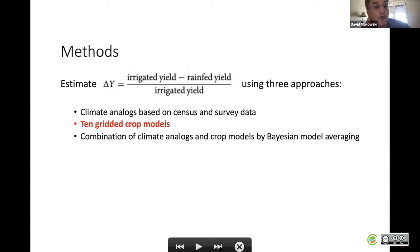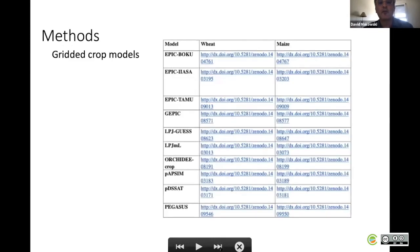The second approach is more traditional. It's based on the 10 gridded crop models. You run the model with and without irrigation at the global scale, and then you can compute the yield gap and map the yield gap as well. The 10 models are listed in this table here. They are standard published crop models, process-based crop models.